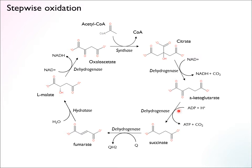In the next step, there is another oxidation. A carboxyl group is cleaved off, and again it's an oxidation reaction that liberates energy. In this case, we are actually able to make ATP in this step. This gives a four-carbon compound, succinate.